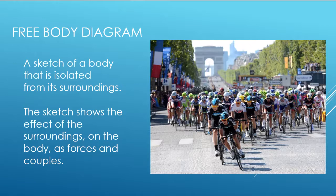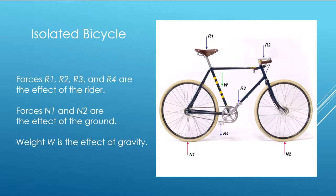So, what is a Free Body Diagram? A Free Body Diagram is a sketch of a body that is isolated from its surroundings. The sketch shows the effect of the surroundings on the body as forces and couples.